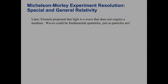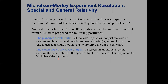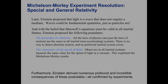This led into special and general relativity. In particular, it provided an experimental basis for the second postulate of special relativity: that the speed of light is constant in all reference frames, there is no particular rest frame for light, and there is no ether.